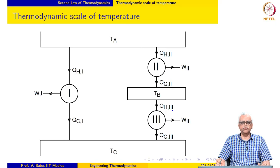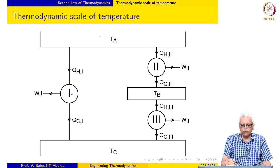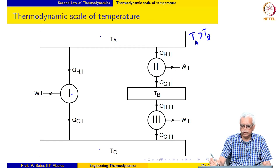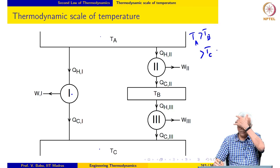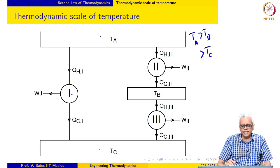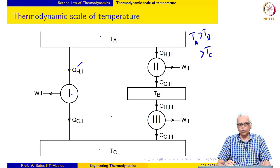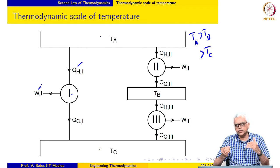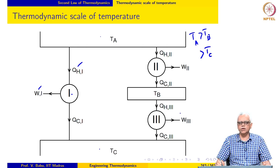Now, to make use of this information: Engine 1 operates between reservoirs TA and TC where TA is greater than TC. I construct another device composed of two reversible engines, 2 and 3. Engine 2 receives the same amount of heat QH1 from the high-temperature reservoir as Engine 1 and rejects heat QC2 to an intermediate reservoir at temperature TB. Engine 3 picks up QH3 from this intermediate reservoir and rejects QC3 to the cold reservoir at TC.